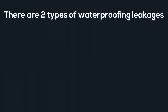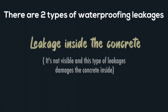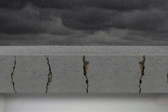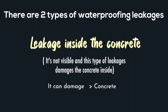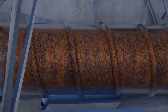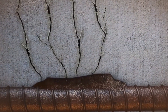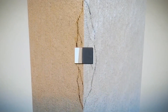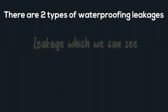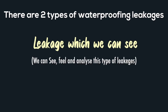There are two types of waterproofing leakage that can happen. One is inside your concrete, which is not visible to you, but it is damaging your concrete inside — water penetrating inside can damage cement particles and cause corrosion of your steel. The second type is what you can see, feel, and analyze — visible leakage where you can clearly identify there is a problem.